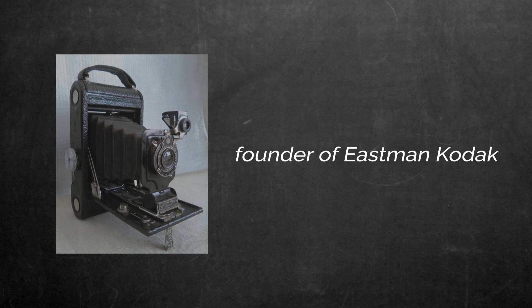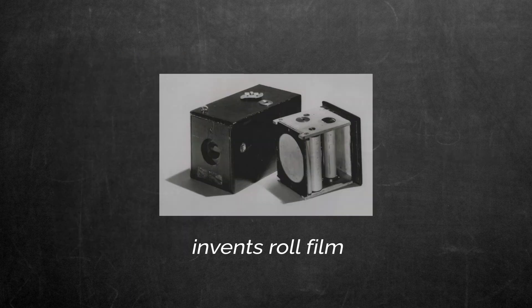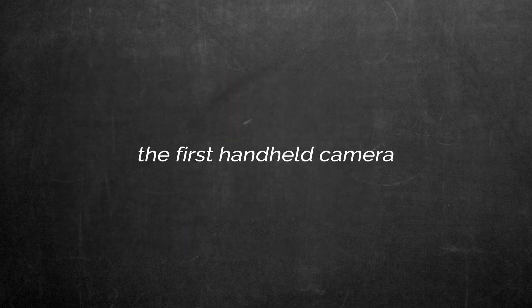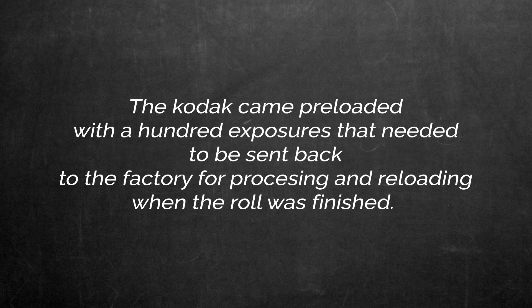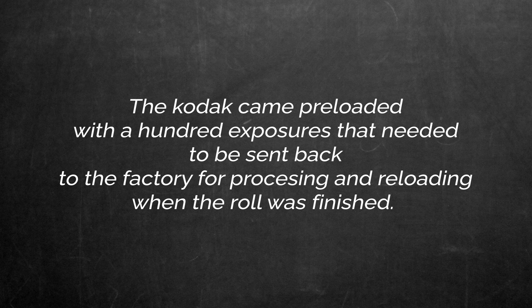In 1885, George Eastman, founder of Eastman Kodak, invents roll film. The first handheld camera, the Kodak, goes on sale in 1888. It came preloaded with a hundred exposures that needed to be sent back to the factory for processing and reloading.